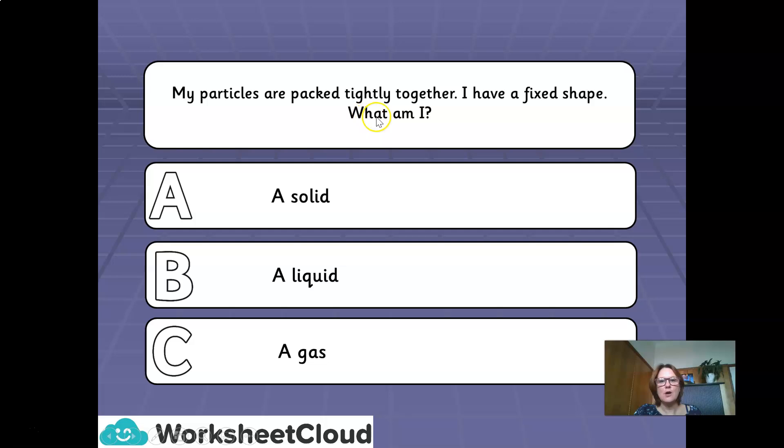My particles are packed tightly together. I have a fixed shape. What am I? A. A solid. B. A liquid. Or C. A gas. Tightly packed together. Fixed shape. What am I? Shout it out. Correct. A. A solid.